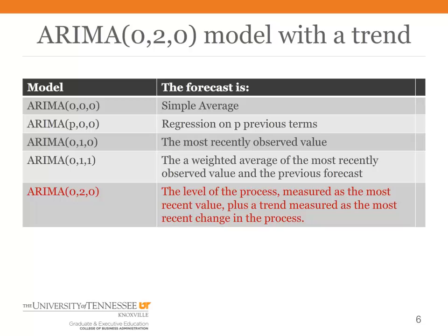When you're forecasting with the ARIMA 020 model, the two in the middle means we're building a trend into the model. When you have a trend, your forecast becomes the currently estimated level plus the trend. For the ARIMA 020 model, you estimate the level as the most recently observed value — just like the random walk model — and you estimate the trend as the difference between the most recent value and the one prior to that, then add those two numbers together to get your forecast.